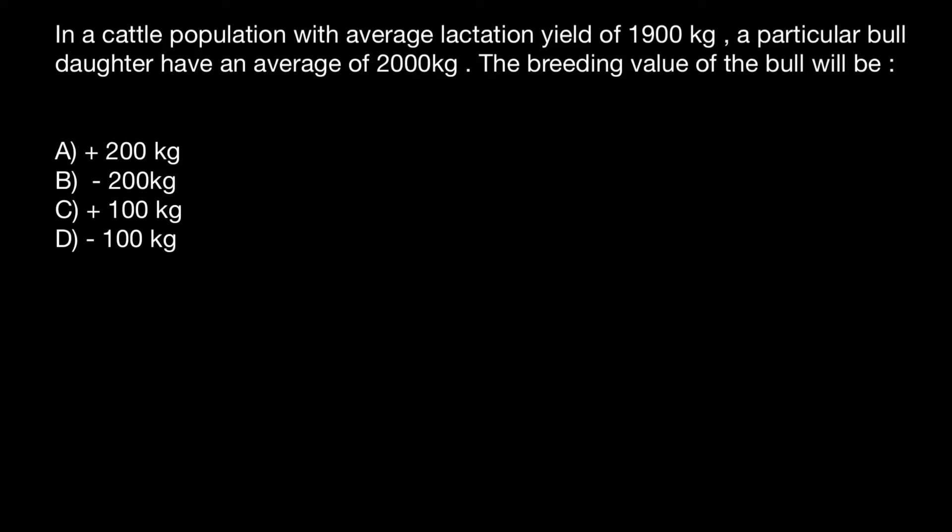Hello and welcome to Nikolai's genetics lessons. Today's question comes from one of my subscribers: in a cattle population with an average lactation yield of 1,900 kg, a particular bull's daughters have an average of 2,000 kilograms. The breeding value of the bull will be — choose the correct answer.